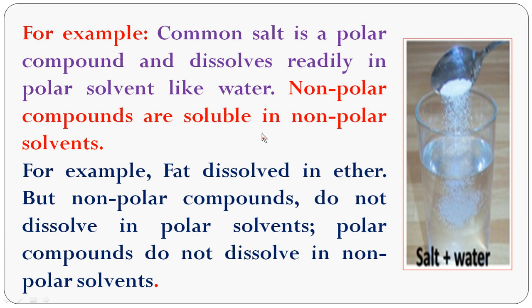Non-polar compounds are soluble in non-polar solvents. For example, fat is a non-polar compound that dissolves in non-polar solvents like ether, benzene, or toluene. These non-polar compounds do not dissolve in polar solvents like water. In the same way, polar compounds such as common salt, magnesium chloride, calcium chloride, or aluminium chloride do not dissolve in non-polar solvents like benzene, ether, or toluene — polar compounds dissolve in polar solvents like water.